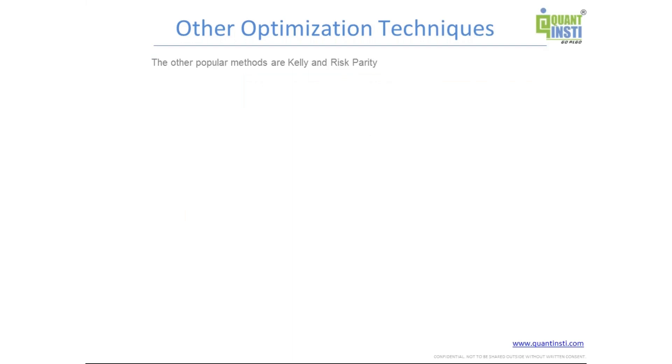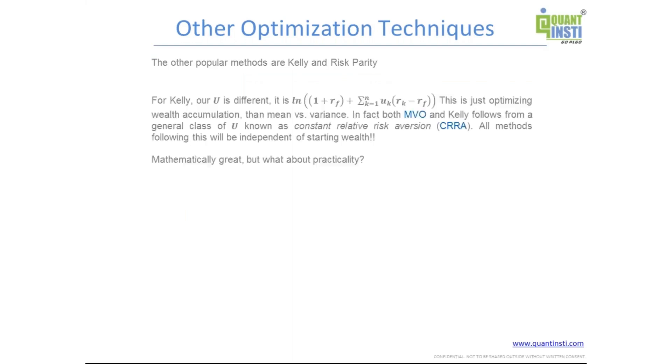So for example, Kelly optimizations or risk parity optimizations. So if you talk about Kelly, the expression that you are trying to use for the U, the utility function, is slightly different. So it's a log expression, ln stands for logarithm natural this.